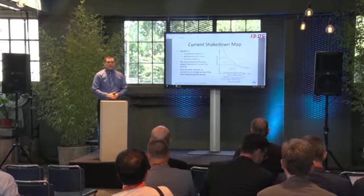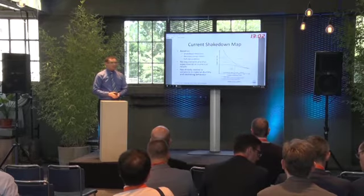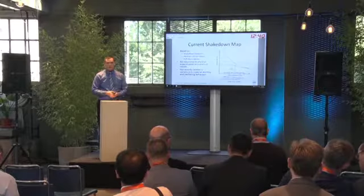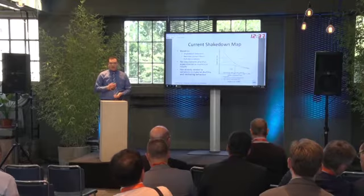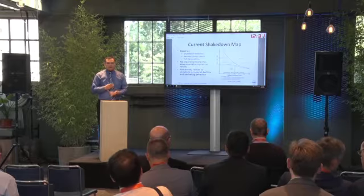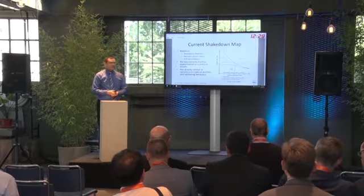In the last century, a theoretical tool known as the shakedown map was developed to predict the material response in a body subjected to cyclic rolling contact conditions. This shakedown map was developed based on the shakedown theorem, Hertzian contact theory, and the assumption of full slip conditions. One of the advantages is that the maximum contact pressure can be estimated from the Hertzian contact theory, so low requirement of either experimental or numerical results is needed.